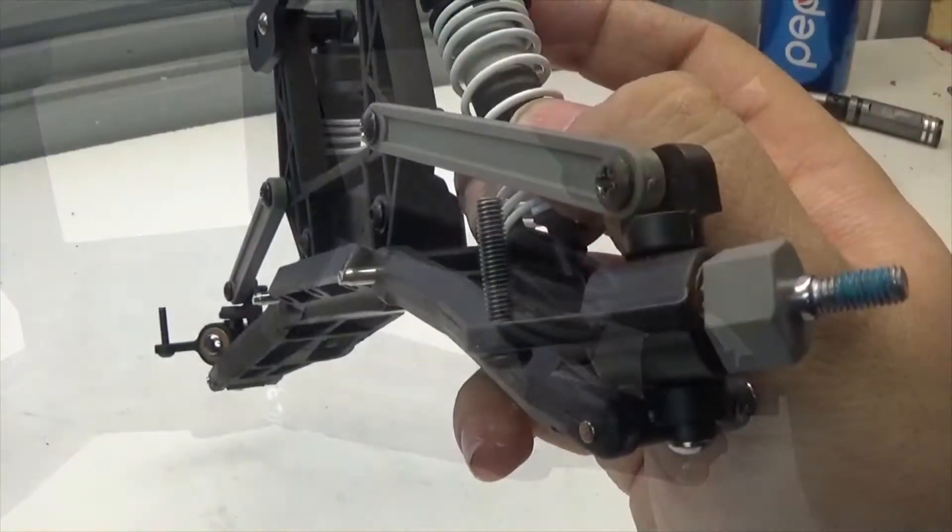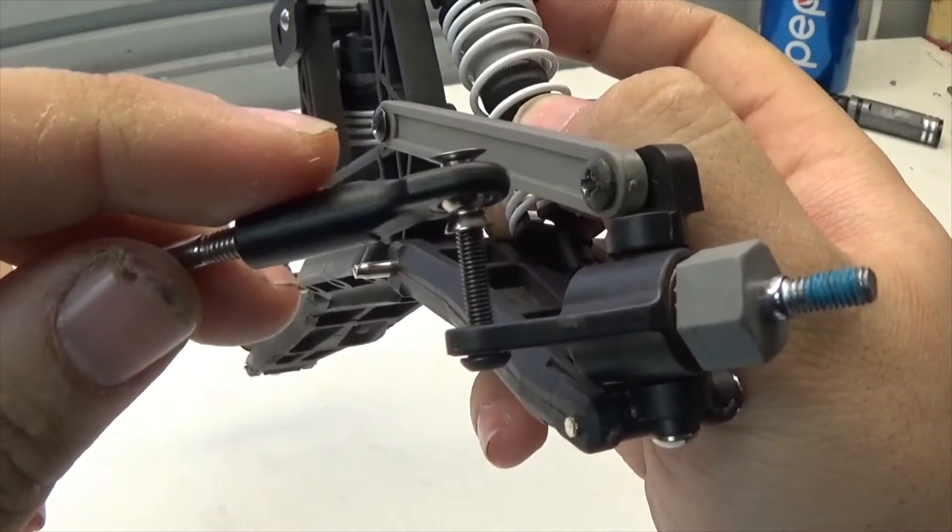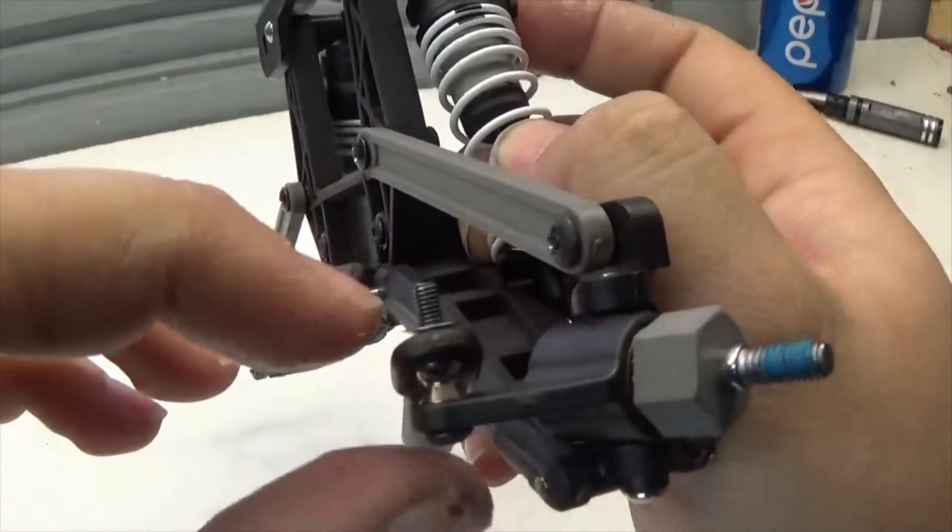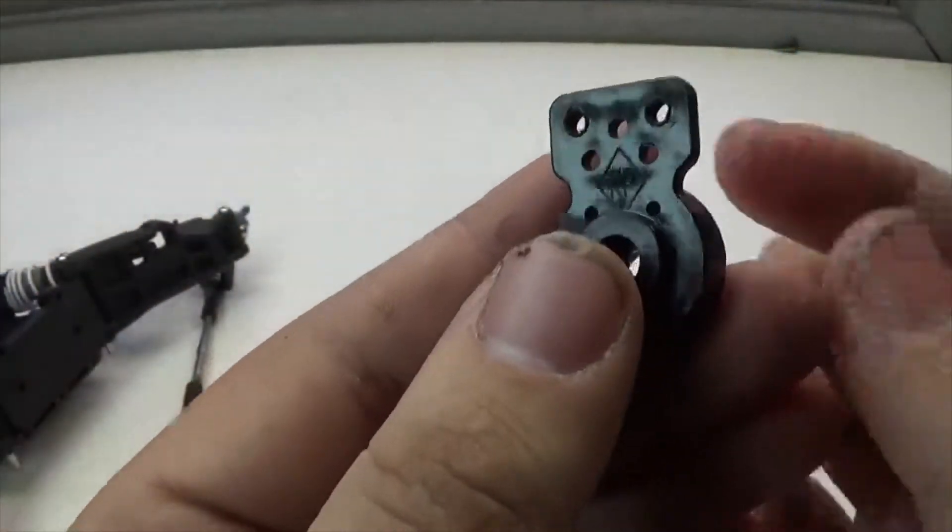Next I'm going to take our toe links, slide one of them onto the screw that's left on the steering block, and screw down a single five and a half millimeter nut.